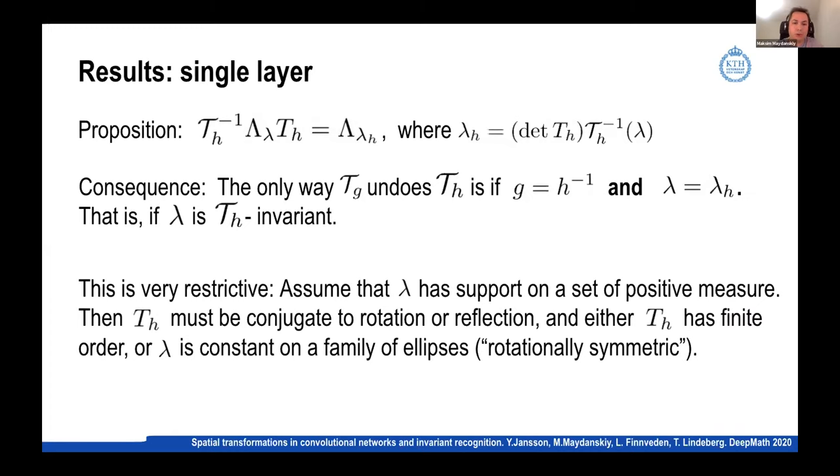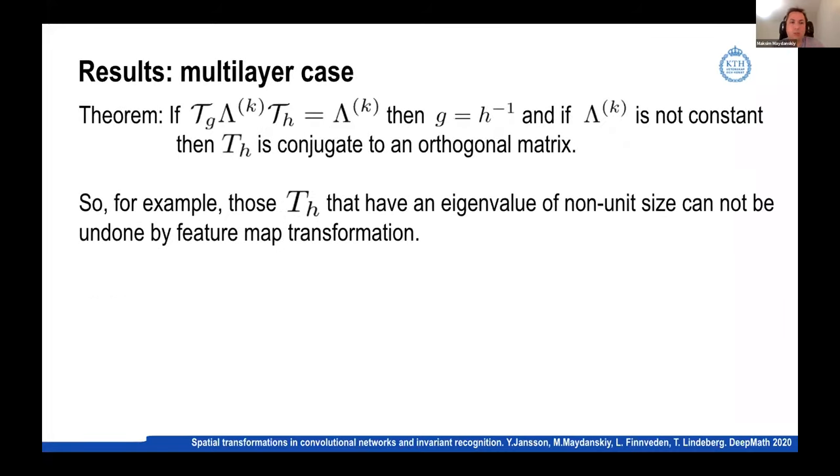But this is very restrictive because this implies that the transformation must be essentially in some coordinates a rotation or reflection. And then this rotation or reflection could have a finite order. So if I do it many many times, either I get identity at some point and then this is just a finite group of transformations and Lambda has to be invariant to this finite number. So maybe it has a kind of an n-fold symmetry going around or something. Or if it's actually a non finite order rotation or reflection, then Lambda has to actually be constant on some family of ellipses. So it's a very kind of non interesting filter in some sense. So only kind of trivial filters and only for these kinds of non hyperbolic or these kinds of rotational transformations could this work.